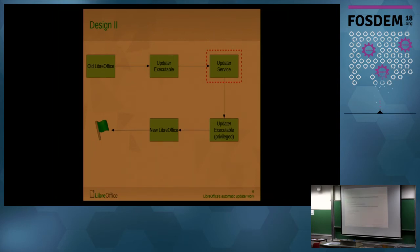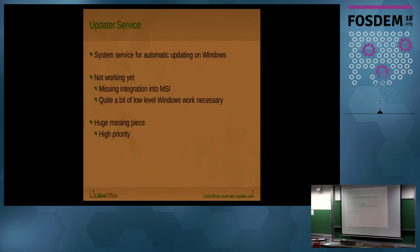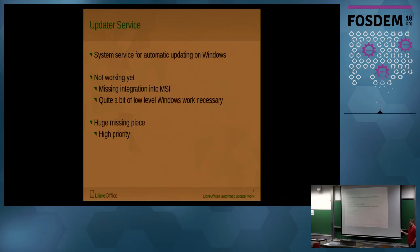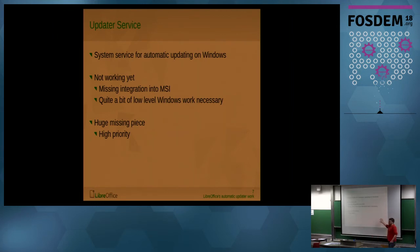Now I'm getting to the parts of the updater work that are not done yet. I already mentioned that the updater service is a huge missing piece. It builds already — it's also taken from the Mozilla code — but it needs a lot of low-level adaptations for our LibreOffice build process. Mozilla does not ship MSI files, so there's still a lot to do to integrate this updater service with our MSI generation. That's one of the main blocking things that prevented me from even trying to get it into 6.0.